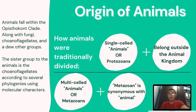Animals traditionally were divided into single-celled animals or protozoans and multicellular animals or metazoans. Because protozoans belong outside the animal kingdom, metazoan is now synonymous with animal. Animals fall within the opisthokont clade along with fungi, choanoflagellates, and a few other groups. The sister group to the animals is the choanoflagellates, according to several phylogenies using molecular characters.